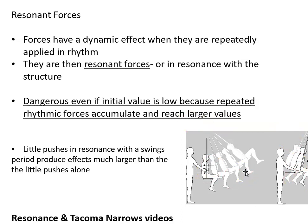Pushing a child on a swing is a great example of that. With small pushes that are all similar in strength, the child will actually go higher and higher on the swing. You're not changing the amount of energy you're putting into the pushing — you're just carefully timing your push to coincide with the natural swing of the child. The natural period of the swing and your pushing coincide, making the natural period work to amplify the effect. So little pushes in resonance with the swing's period produce much larger effects.